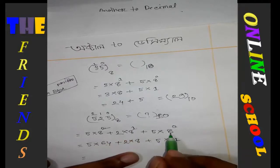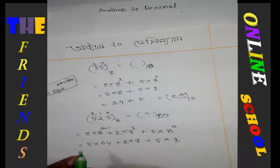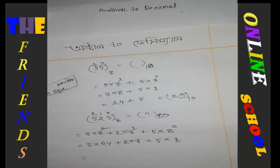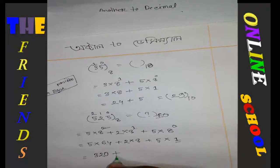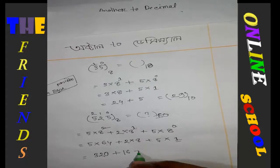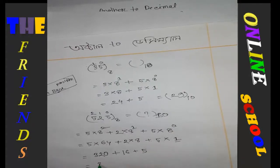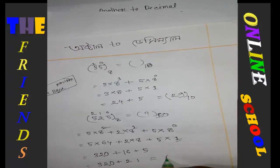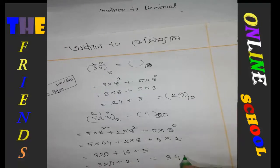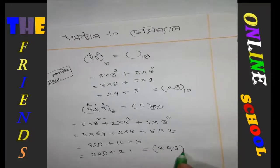8 to the power 0 means 1. Now we calculate: 5 times 64 equals 320, plus 2 times 8 equals 16, plus 1 times 1 equals 1. So 320 plus 16 plus 1 equals 337. So (521)₈ equals (337)₁₀.